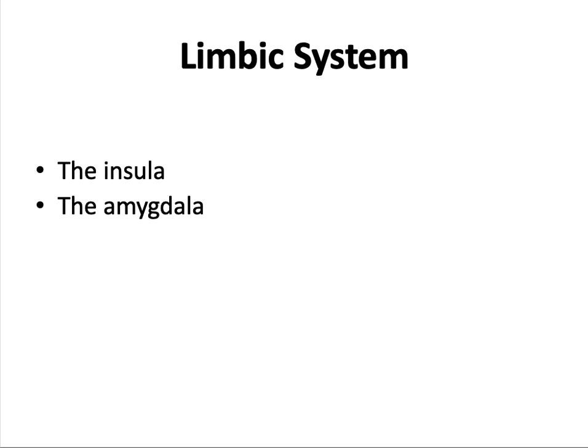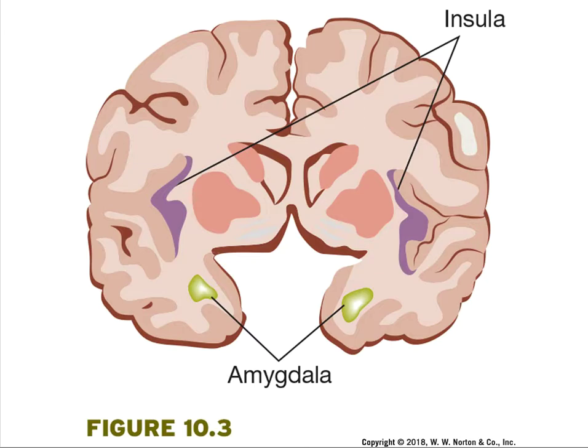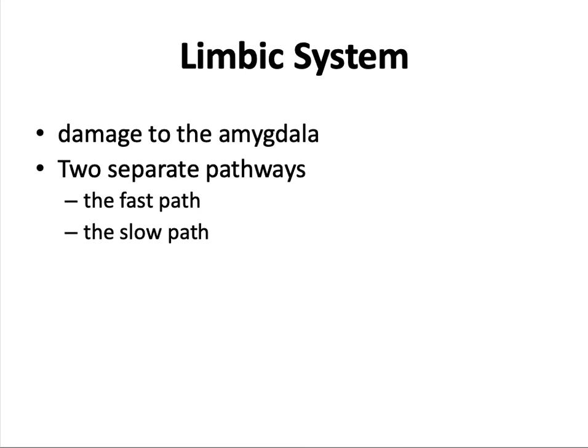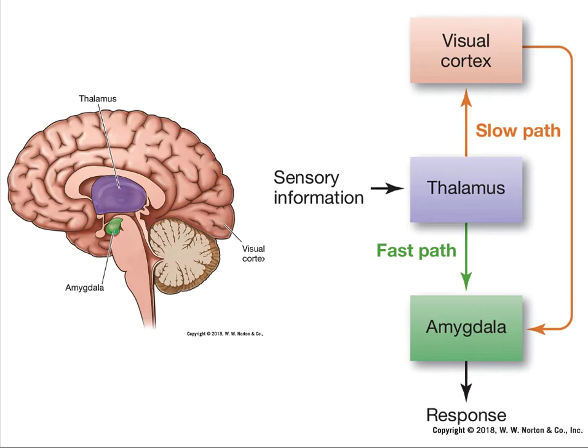The amygdala processes the emotional significance of stimuli and generates immediate emotional and behavioral reactions. A brain cutaway shows where the amygdala and insula are located. People with damage to the amygdala do not develop conditioned fear responses to objects associated with danger. Information reaches the amygdala along two separate pathways: the fast path, by which sensory information travels quickly through the thalamus directly to the amygdala for priority processing, and the slow path, by which sensory material travels from the thalamus to the cortex where it is scrutinized in greater depth before being passed along to the amygdala.